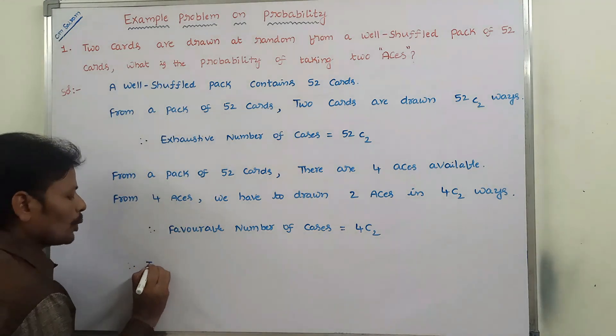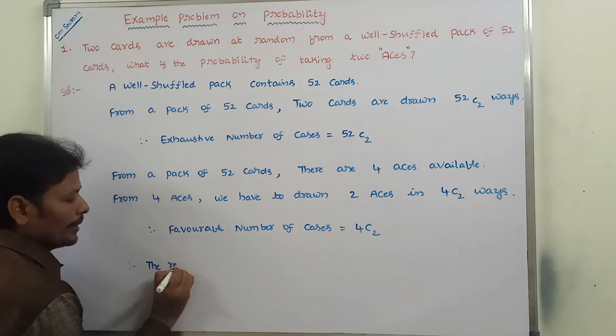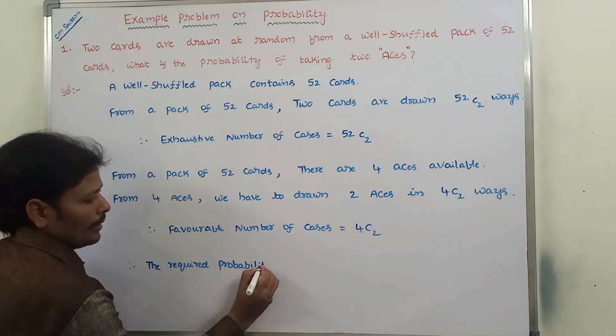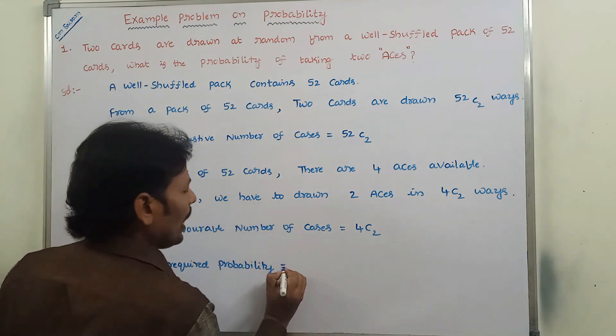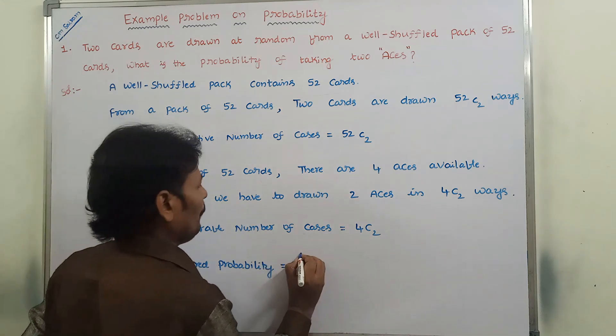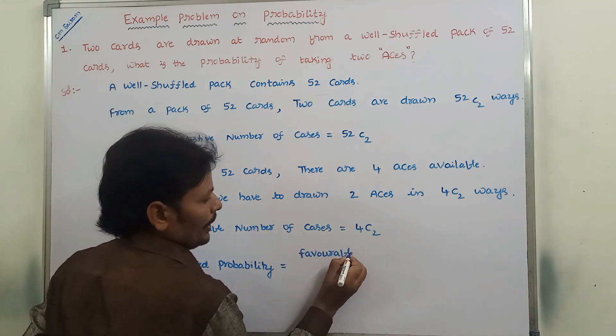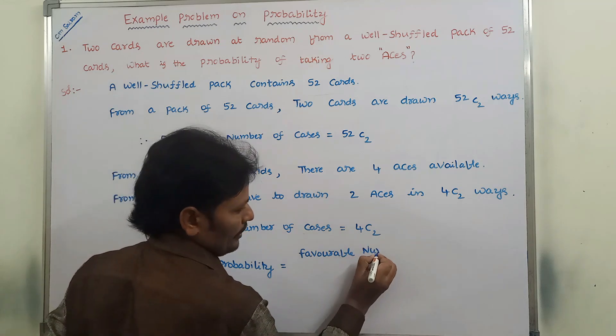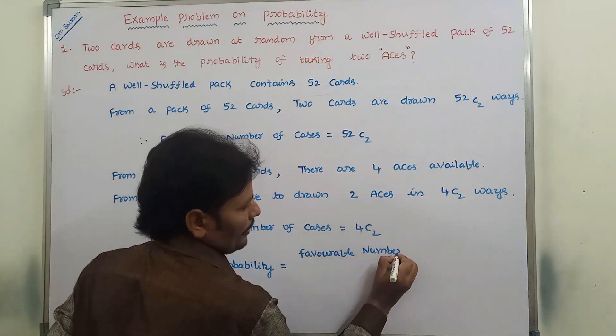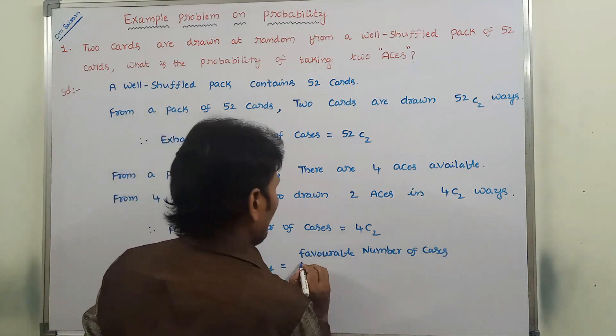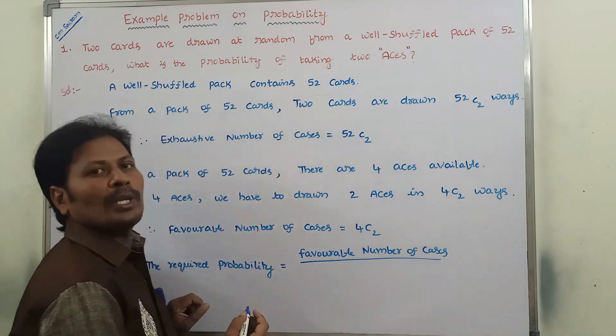Therefore, the required probability is nothing but favorable number of cases divided by exhaustive number of cases.